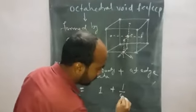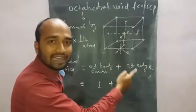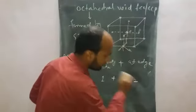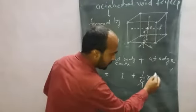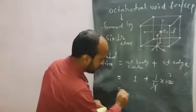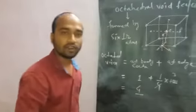Therefore at edge, 1 and it is 1/4 into at each edge there are 12 edges, therefore at each edge 12 octahedral voids are found. Then 4 into 3, 3 plus 1 is equal to 4.